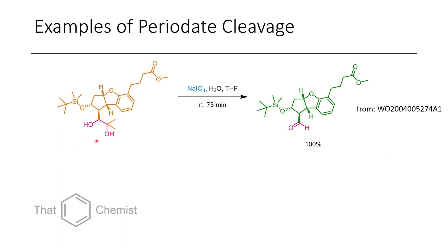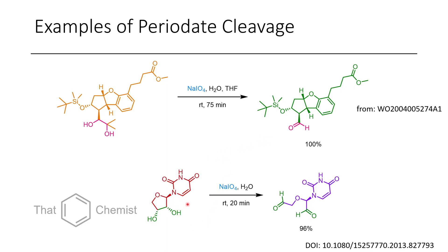Examples of periodate cleavage include this complex tricyclic compound with protecting groups and esters, which is cleanly converted to the aldehyde plus acetone (not shown). The tertiary alcohol is cleaved to give acetone since we break the carbon-carbon single bond. This is a fast reaction occurring in water at room temperature in only one hour and fifteen minutes. Another example is a nucleoside derivative, where cleavage of the tetrahydrofuran ring affords a linear system with two aldehydes, while retaining the stereochemistry of the nitrogen-containing heterocycle — all in only 20 minutes. This is a mild procedure that tolerates complex functional groups.